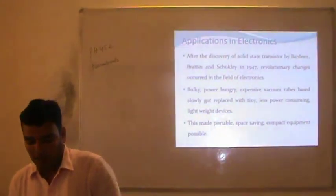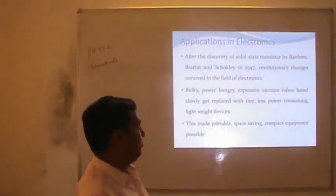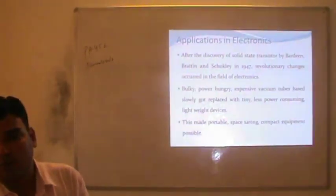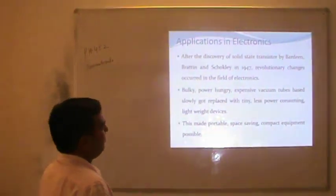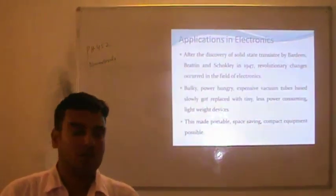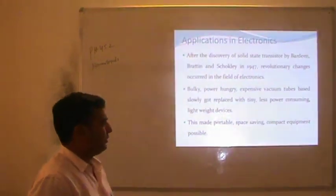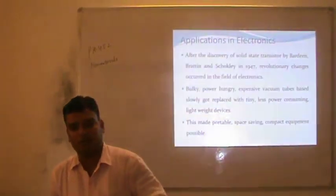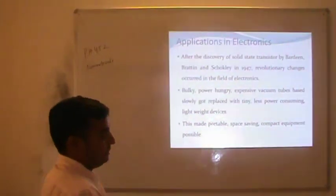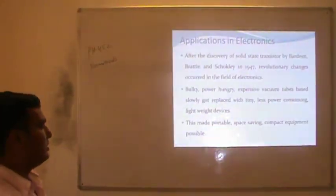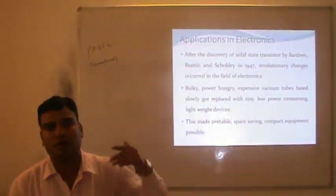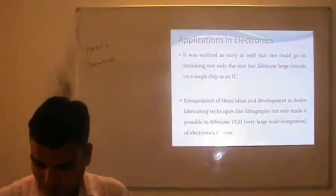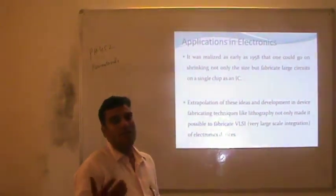As we know, electronics has different phases. Before 1947 we had vacuum diodes or vacuum tubes. After 1947, Bardeen and Shockley devised solid-state electronics. Before 1947, solid-state devices were based on vacuum diodes — bulky, power-hungry, and expensive vacuum tubes — which were slowly replaced by tiny, low power consumption, lightweight devices. In 1947, solid-state physics invented new materials and techniques to develop solid electronic devices. It was realized as early as 1958 that fabrication is possible on integrated chips or integrated circuits on silicon chips.